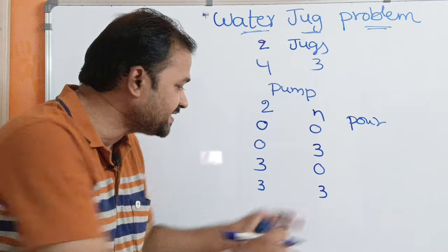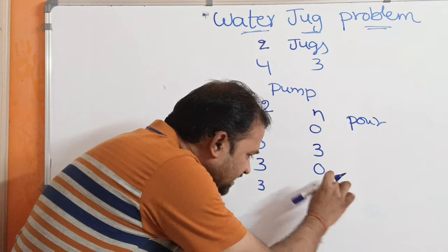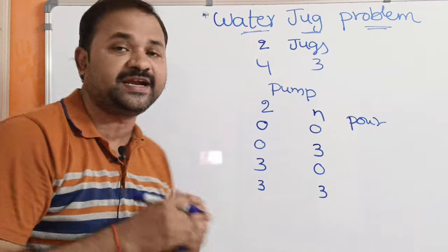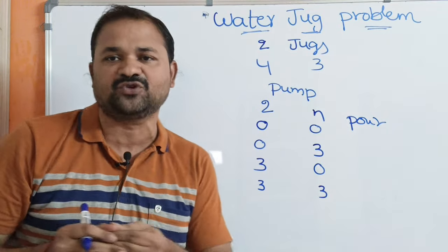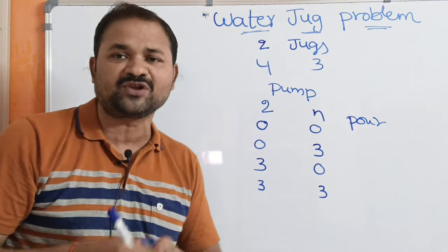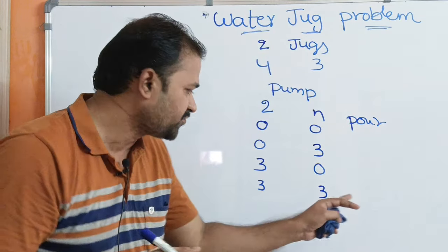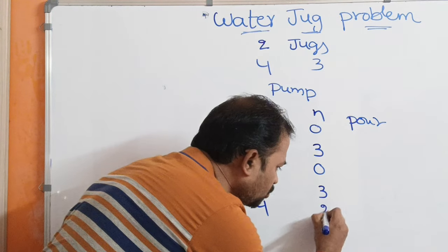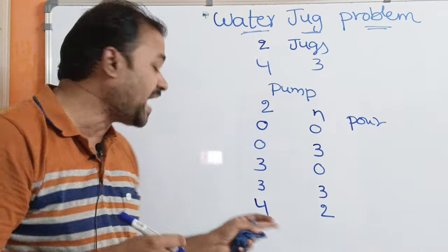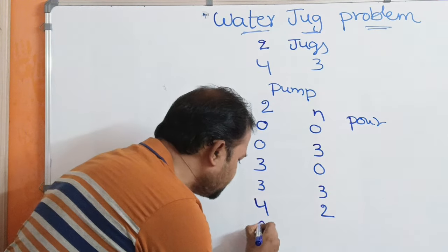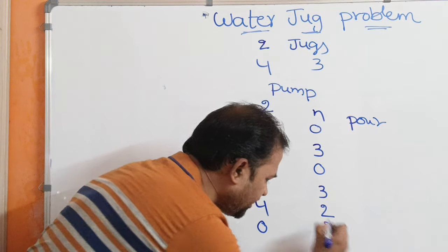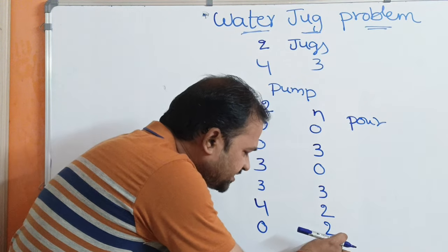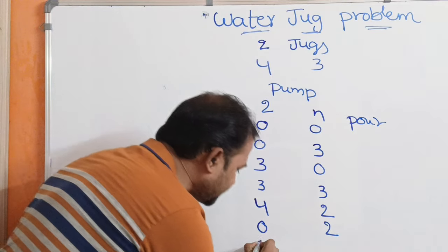Next, we pour water from the 3-liter jug into the 4-liter jug until the 4-liter jug is completely full. The capacity of the 4-liter jug is 4 liters, and it already has 3, so we can place only 1 more liter. After placing 1 liter, the 4-liter jug becomes full (4), and the 3-liter jug has 3 minus 1 = 2 liters remaining. Then we empty the 4-liter jug, making it 0. Next, we place the 2 liters from the 3-liter jug into the 4-liter jug, giving state (2, 0).